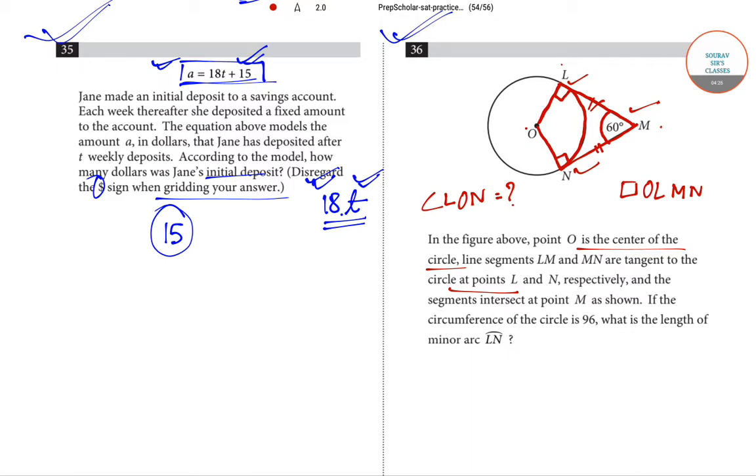We can easily find angle LON by subtracting the summation of these three angles from 360 degrees. The summation of these three angles will be 90 degrees plus 90 degrees, that is 180 degrees, plus 60 degrees. So 180 degrees plus 60 degrees, which is 240 degrees. Therefore, 360 degrees minus 240 degrees is 120 degrees, which is the measurement of angle LON.